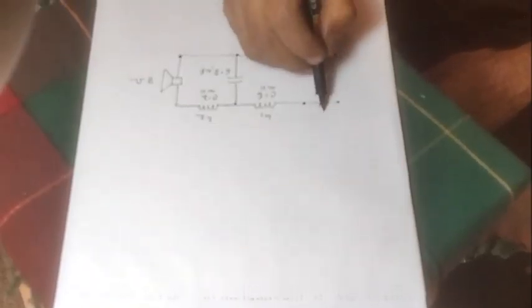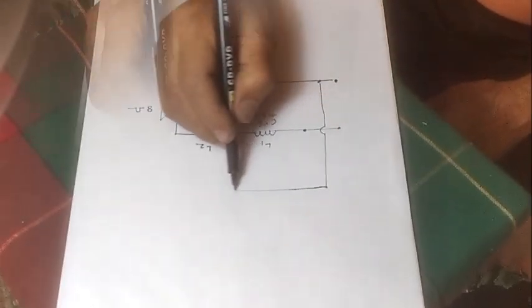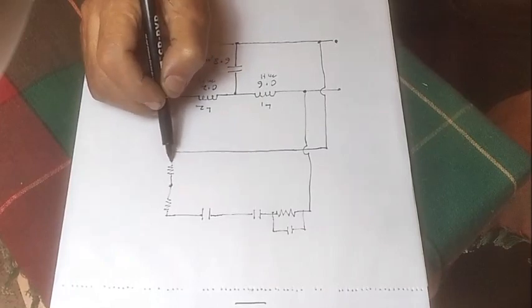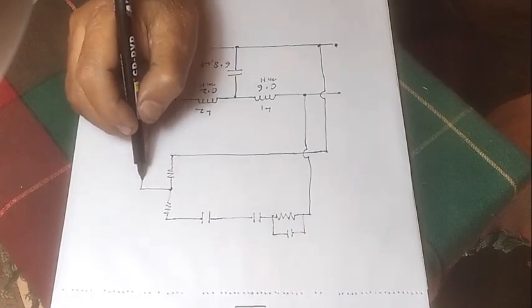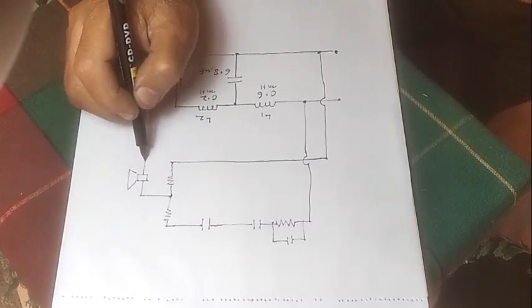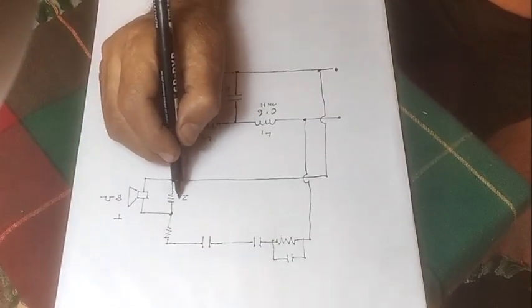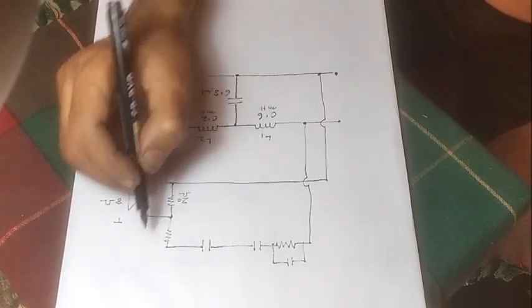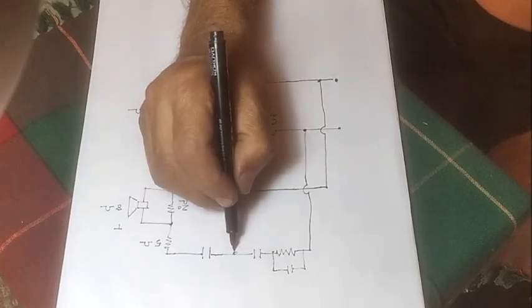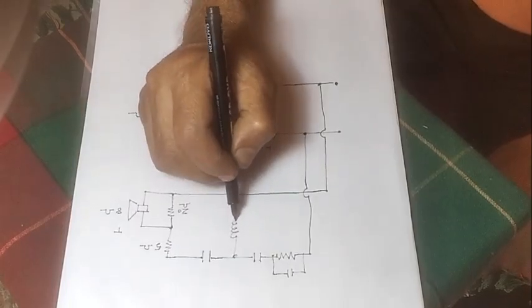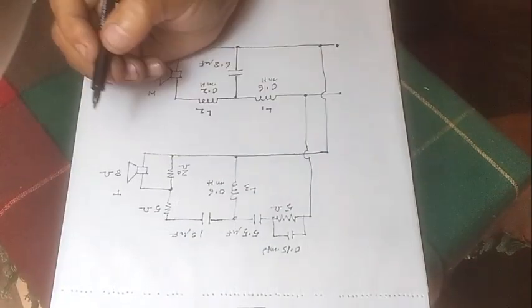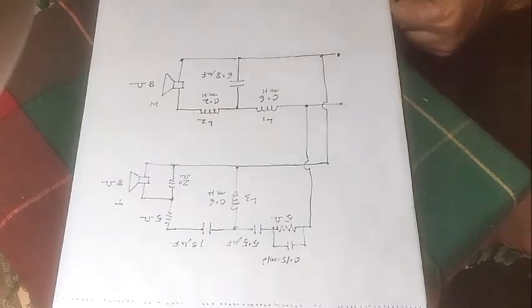Basically inductors and capacitors are used in the circuit. Values of components can easily be found from online calculators or tables as per the required crossover point. I have used some resistors in the tweeter circuit for smooth high frequency response.